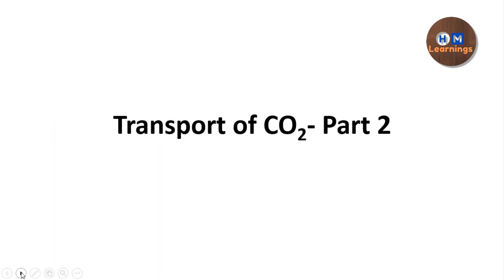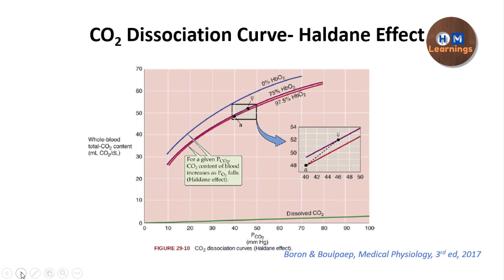Now in this video we are going to talk about a very important concept: the Haldane effect and the carbon dioxide dissociation curve. You can see here that this is a curve with a y-axis and an x-axis. The x-axis shows the pCO2 in mmHg, and the y-axis shows the total content of carbon dioxide — that is, ml of CO2 per 100 ml of blood.